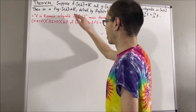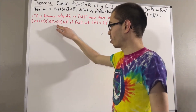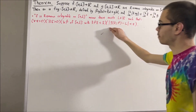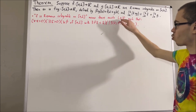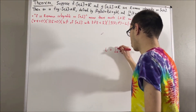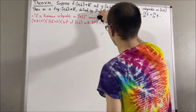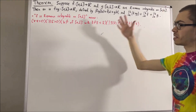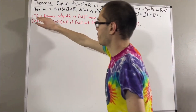To say that f is Riemann integrable on [a, b] means there exists a real number L such that for every ε > 0, there exists δ > 0 such that for all tagged partitions p of [a, b] whose norm is less than δ, the absolute value of the Riemann sum minus L is less than ε. We have proven that this L is unique, and we denote it as the integral from a to b of f. Similarly, g is Riemann integrable on [a, b] means the same thing with g replacing f.